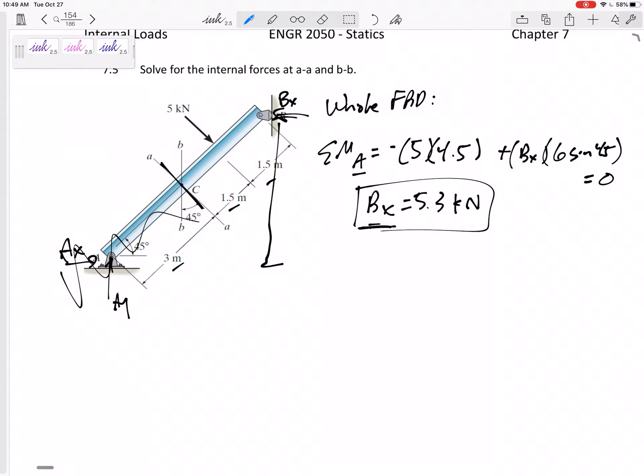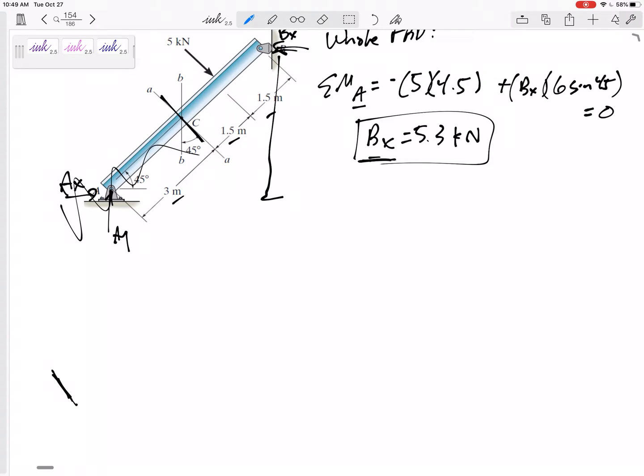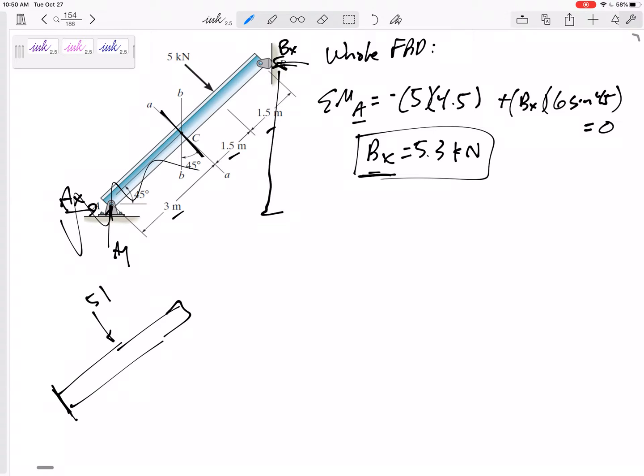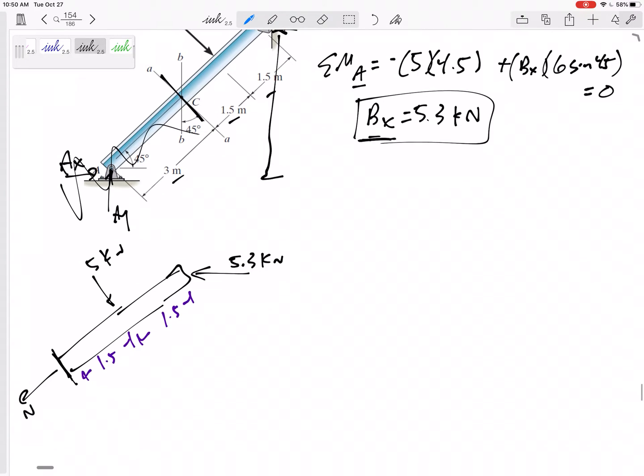All right so first let's cut it at AA. So cut it here at AA and what do I have on this side? I have the five kilonewtons. This is 1.5 meters, 1.5 meters away. I've got 5.3 kilonewtons and this is a 45 degree angle. All right so N is out of the cut. I kind of tilted my head to the left 45 degrees I guess. V should be up and M should be rotating that way.